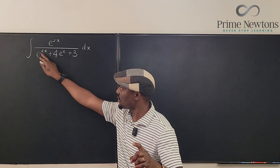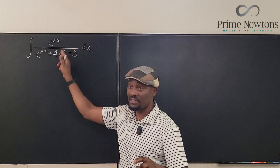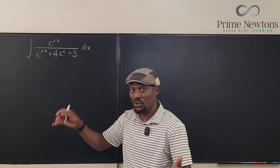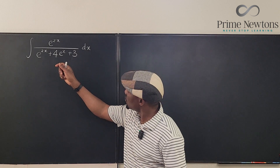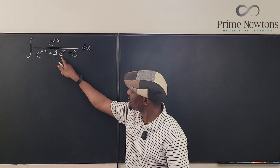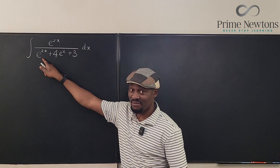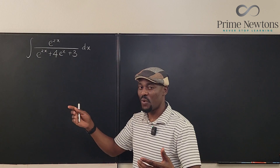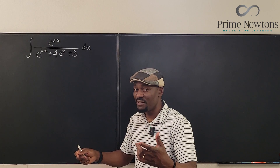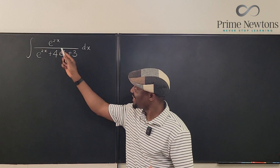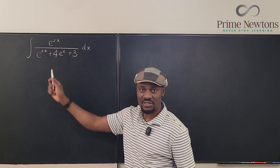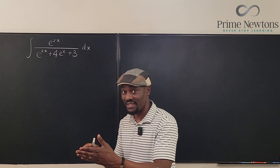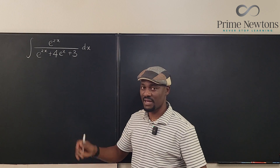If we take e to the 2x as our u, it doesn't help us — we can't use the whole denominator either. The derivative of e to the 2x is 2e to the 2x, and we'd end up with square roots in the denominator, which becomes more complicated. So let's try e to the x. Its derivative is e to the x, and we can split e to the 2x into e to the x times e to the x — take one and leave one as u.